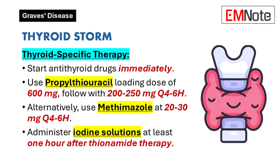Thyroid-Specific Therapy for Thyroid Storm: The primary goals of thyroid-specific therapy are to decrease thyroid hormone synthesis, prevent the release of thyroid hormones, and reduce the peripheral effects of circulating hormones. Antithyroid drugs, specifically thionamides, should be administered immediately to inhibit the formation of new thyroid hormones.